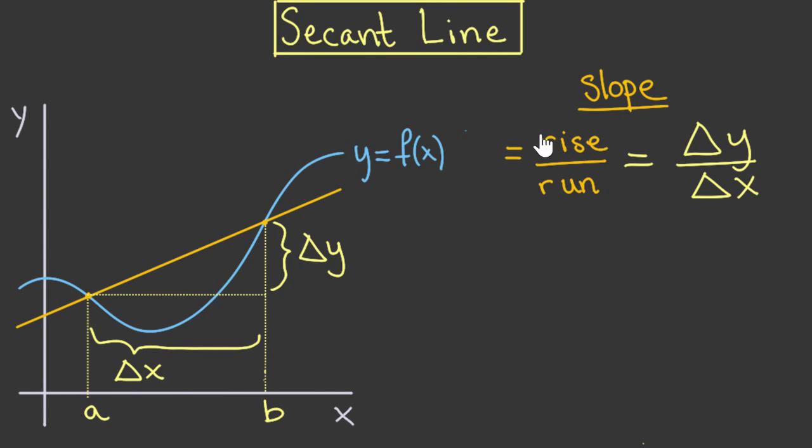So let's start with the rise delta y. The value of delta y is given by the value of our function at the point b, f of b, minus the value of this function at the point a, giving us f of b minus f of a. This is the difference or the change in f.